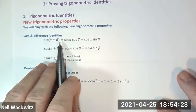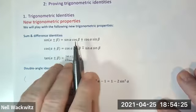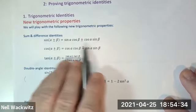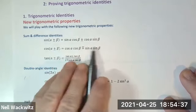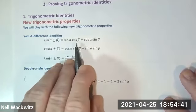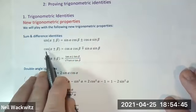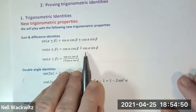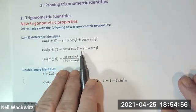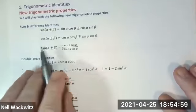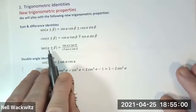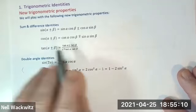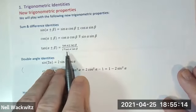The properties we're going to look at today are the sum and difference identities. The sine of alpha plus beta is sine alpha cosine beta plus cosine alpha sine beta. The sine of alpha minus beta is sine alpha cosine beta minus cosine alpha sine beta. The cosine of alpha plus beta is cosine alpha cosine beta minus sine alpha sine beta. The tangent of alpha plus beta is tangent alpha plus tangent beta divided by one minus tangent alpha tangent beta. And tangent of alpha minus beta is tangent alpha minus tangent beta divided by one plus tangent alpha tangent beta.